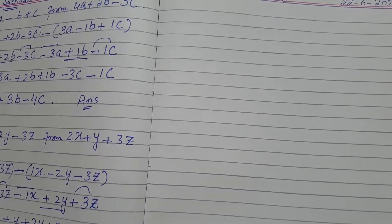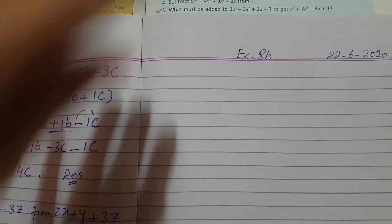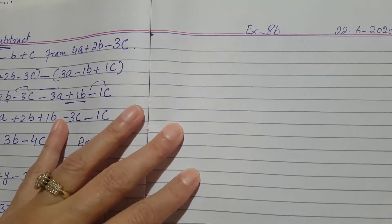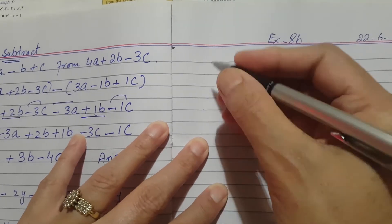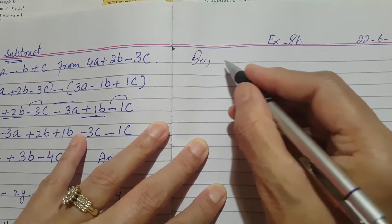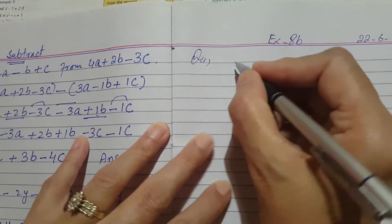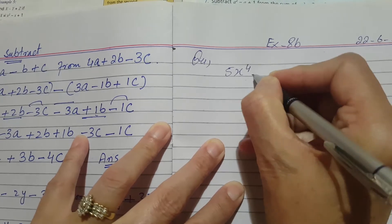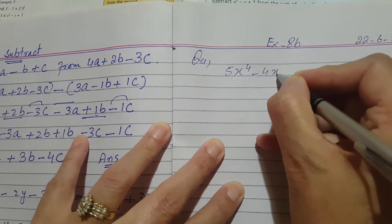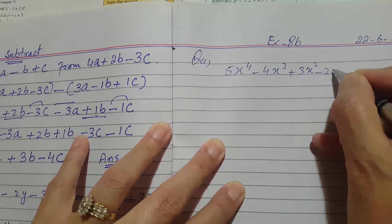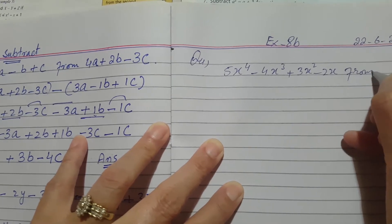Assalamu alaikum dear children. Today we will do question number 4 of exercise 8b. The question says subtract 5x raised to the power 4 minus 4x cube plus 3x square minus 2x from 1.